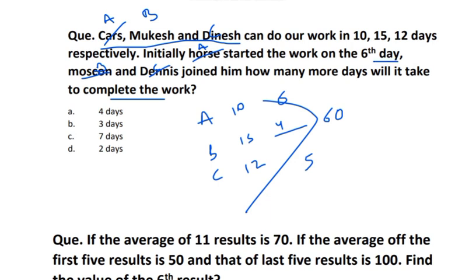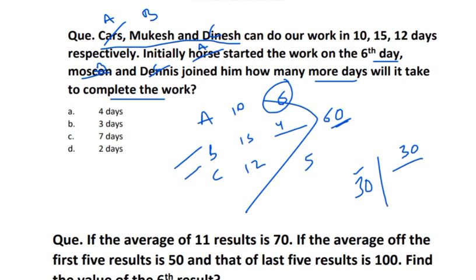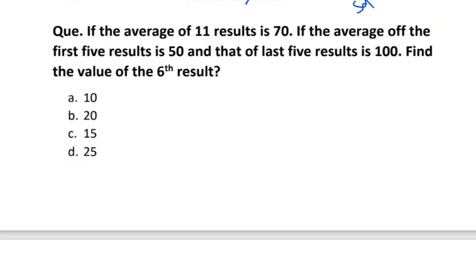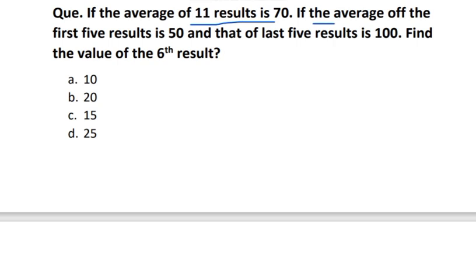On the sixth day B and C came, meaning A worked for five days alone. A does 6 units per day, so in five days A completes 30 units. The remaining work is 30 units (out of 60 total). Now B and C have joined A - together they do 6 + 4 + 5 = 15 units per day. For the remaining 30 units it will take two more days. The answer is D - two more days. If asked for total days it would be seven, but they asked only how many more days, so the answer is two.